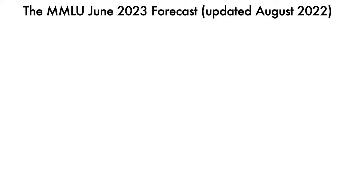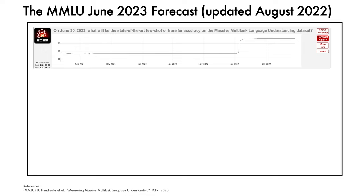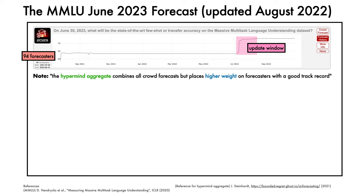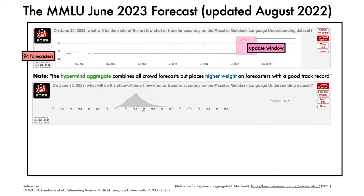Now let's look at how the MMLU HyperMind forecast has evolved. Here is the plot. We can see that there were 94 forecasters. We can also see that the estimates were revised substantially upwards in the second period of the competition. Note that to produce this aggregate prediction from the forecasters, HyperMind combines all crowd forecasts but places higher weight on forecasters with a good track record. Here is how the forecaster distribution looks.